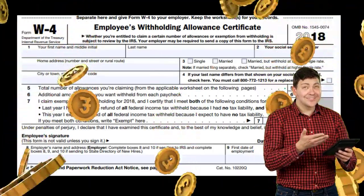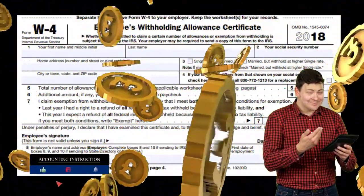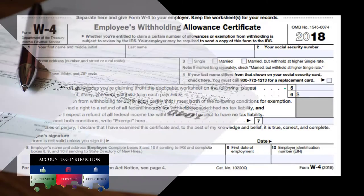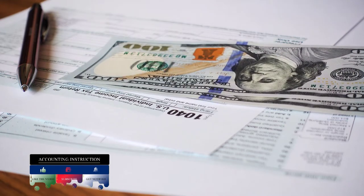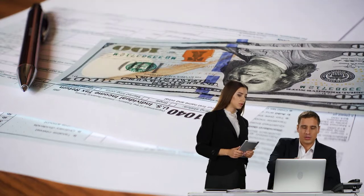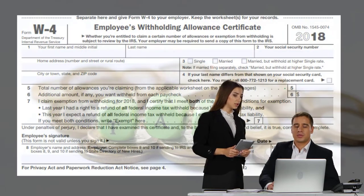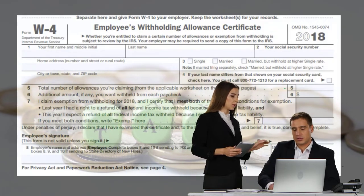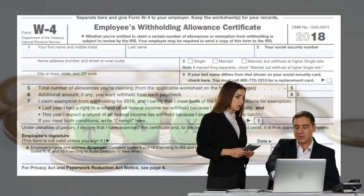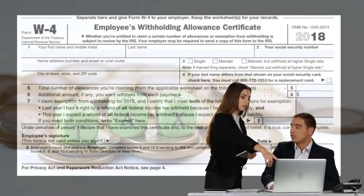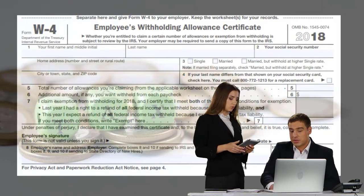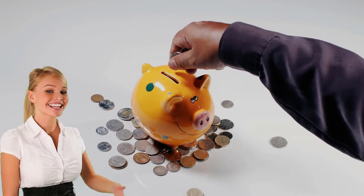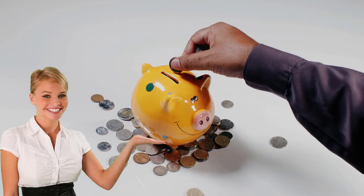We do this to figure out, based on the complex individual tax system, what the withholdings should be. Usually we want withholdings to just barely be more than the actual tax obligation. The tax system is designed to have the employer take from the employee a little bit more than they will actually owe in income taxes. When they file the 1040 at year end, they'll get a refund. The system is designed this way because the government is most likely to get paid by having the employer withhold the proper amount.